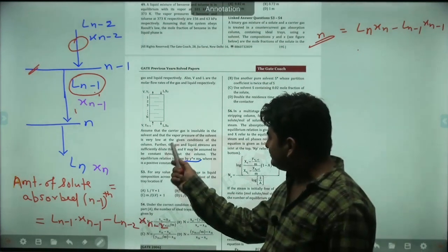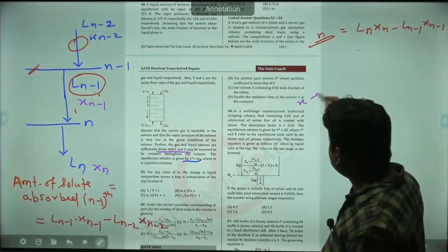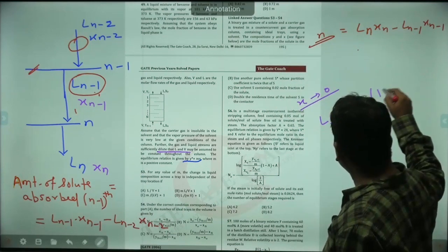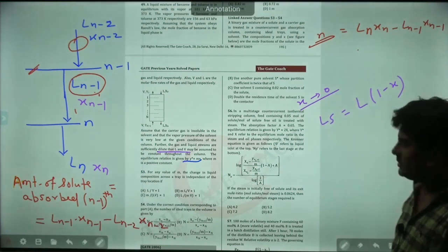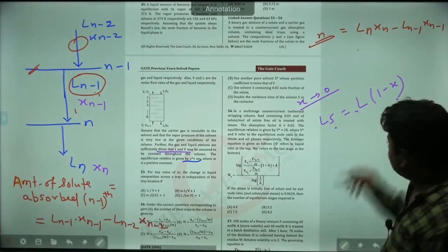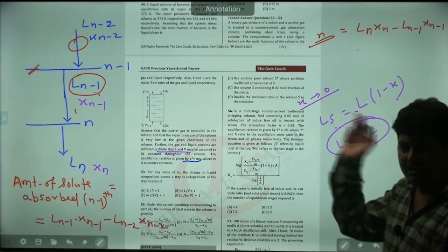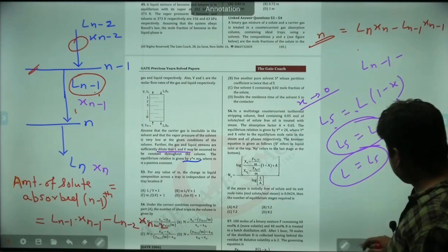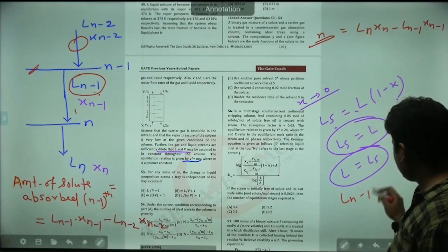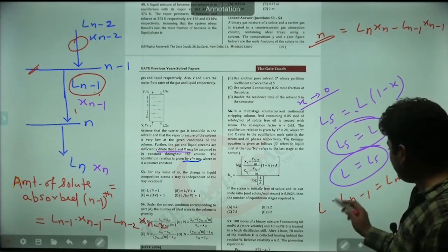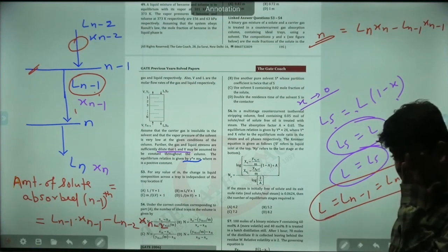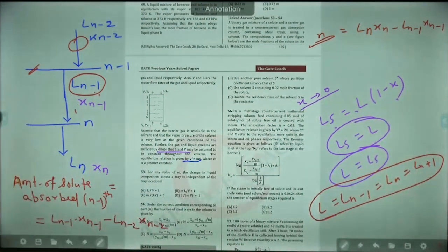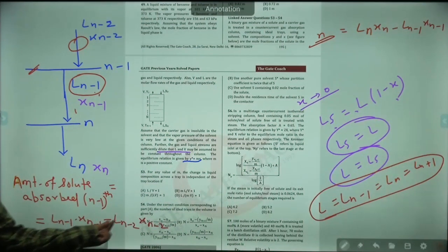Since the stream is dilute, the mole fraction X is very small throughout the column. L_S equals L times (1 minus X), so as X tends to 0, L_S equals L throughout the column. That means L is constant, so all values L_{N-1}, L_N, L_{N+1} are all equal to L. So the amount of solute absorbed on the N-th tray is L times (X_N minus X_{N-1}).